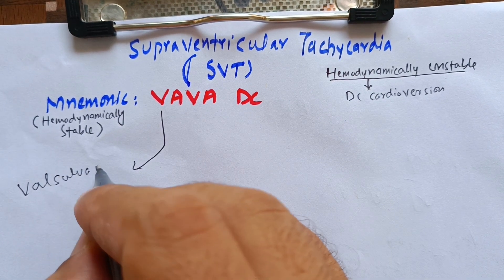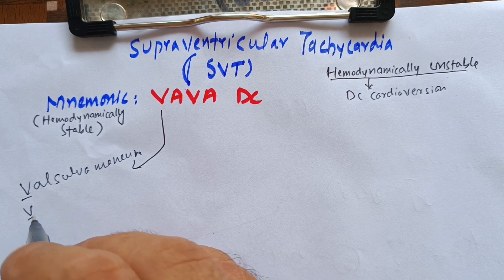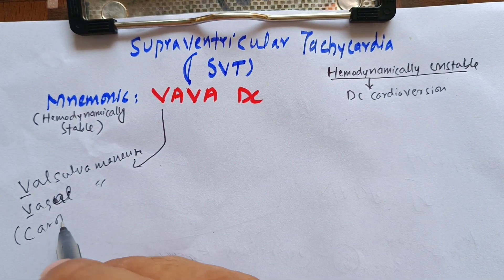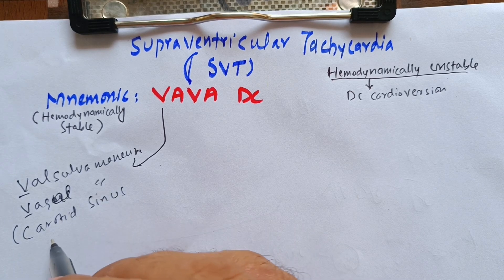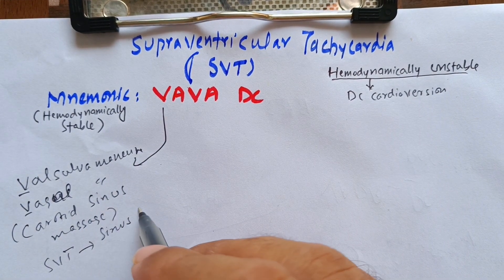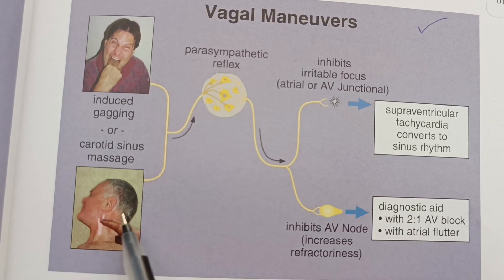V stands for Valsalva maneuver, which we can also call vagal maneuver, which we will do by carotid sinus massage. This carotid sinus massage will lead to convert SVT into sinus rhythm.